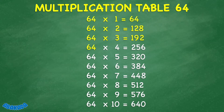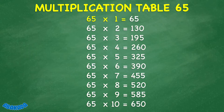64 times 4 equals 256. 64 times 5 equals 320. 64 times 6 equals 384. 64 times 7 equals 448. 64 times 8 equals 512. 64 times 9 equals 576. 64 times 10 equals 640. 65 times 1 equals 65.